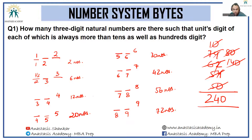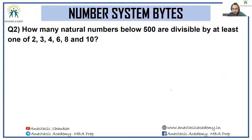So the answer to 'how many three-digit natural numbers are there such that the unit digit is always more than the tens as well as hundreds digit' is 240.